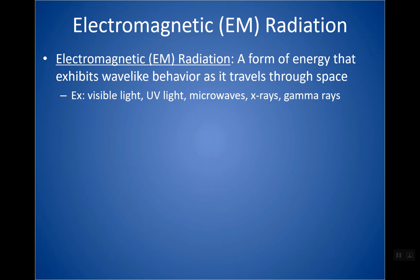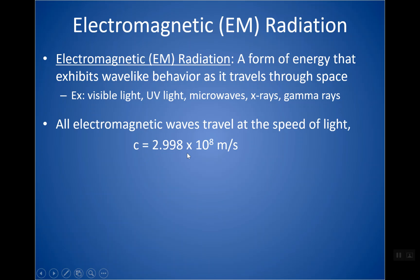The EM spectrum includes all types of energy that travel as waves in space: visible light, ultraviolet or UV light, microwaves, radio waves, x-rays, and gamma rays. These all travel as waves, and they all travel at the speed of light. The speed of light, given the variable C, is 2.998 times 10 to the 8th meters per second — a unit of speed. For problems, you can approximate this as 3 times 10 to the 8th, or use the full number. It is on your AP Chem formula sheet.